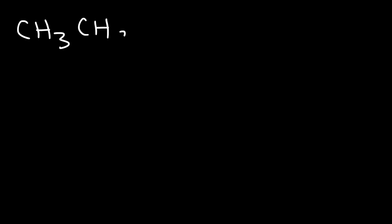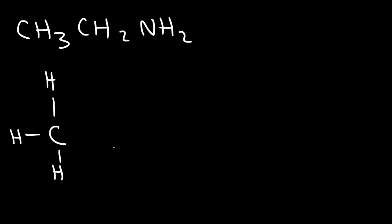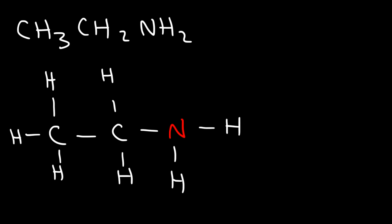Let's try another example: CH₃CH₂NH₂. Draw the Lewis structure for that molecule. Viewing it from left to right, we start with CH₃ — a carbon attached to three hydrogen atoms — then CH₂, a carbon attached to two hydrogens, and then NH₂. Nitrogen likes to form three bonds and hydrogen can only form one, so this nitrogen has three bonds and typically one lone pair. So this is the structure of ethylamine.